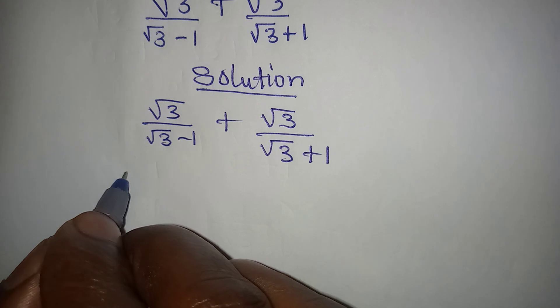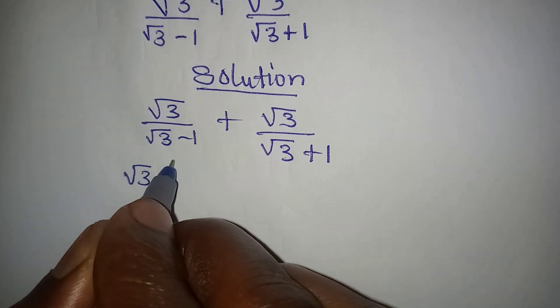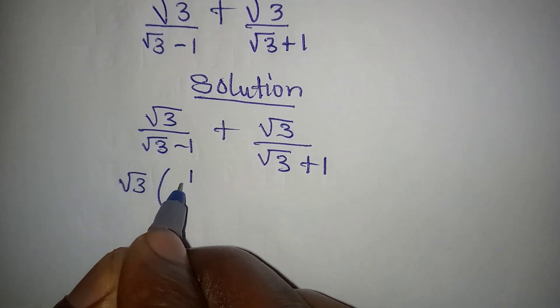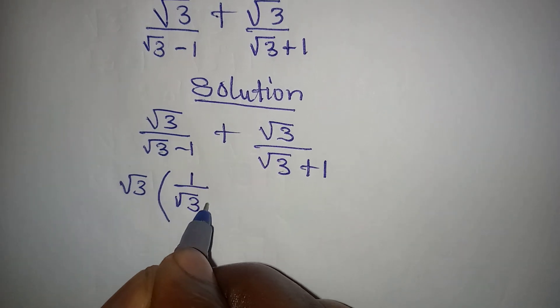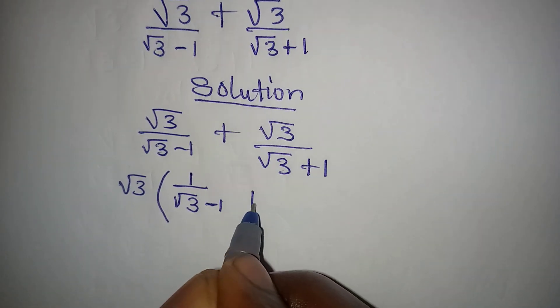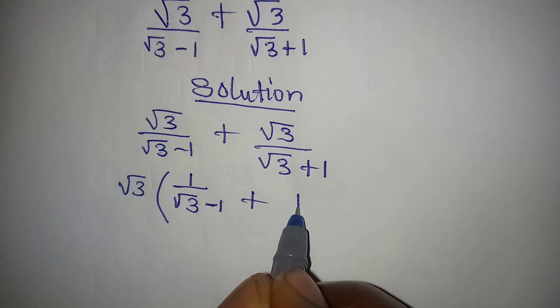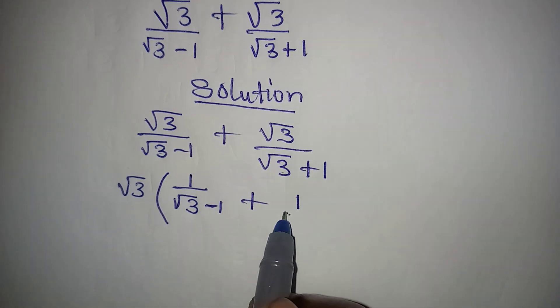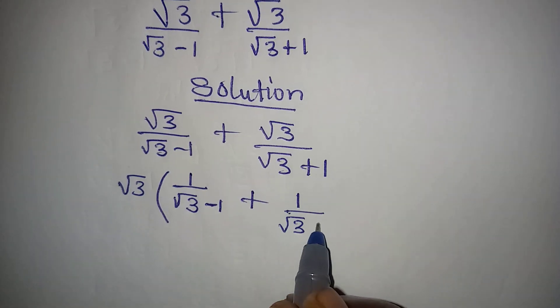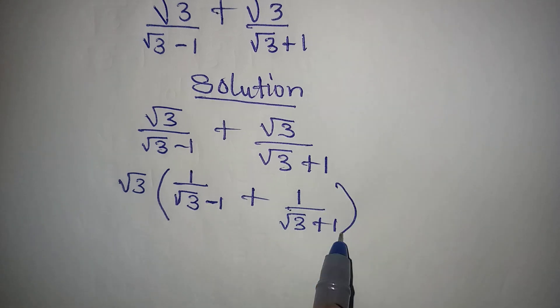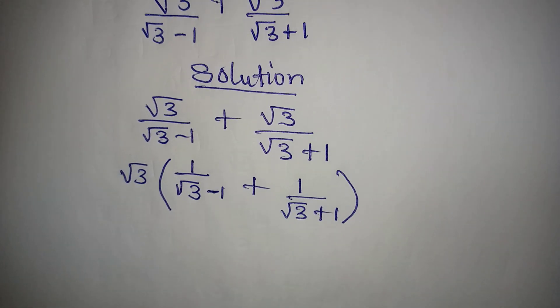Why don't we bring out root 3? So we have root 3 as a common factor. I have 1 over root 3 minus 1, then plus 1 because root 3 is out, over root 3 plus 1.